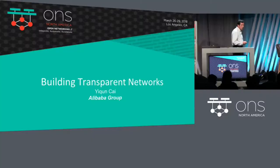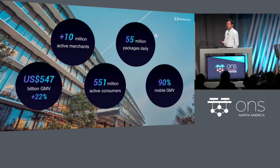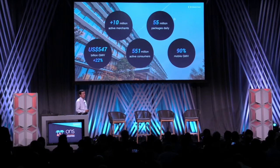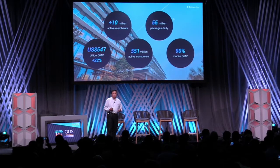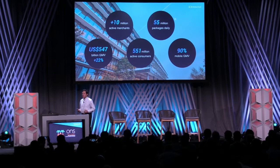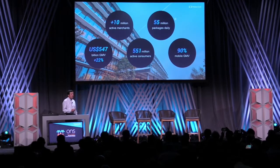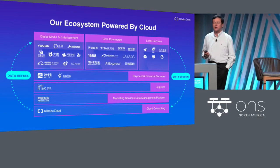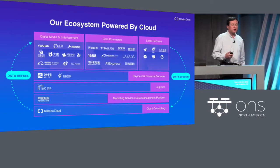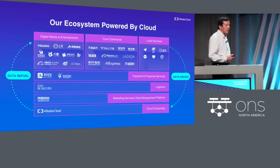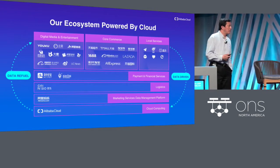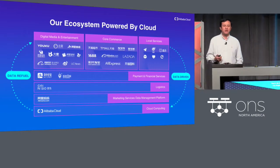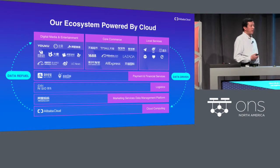Today what I'm going to talk about is what Alibaba faces — our challenges and our opportunities to build a network that can satisfy today's applications. As you all know, we at Alibaba are experiencing a great expansion in digital innovation, and to support our various businesses — here are some fancy blocks showing some of the things we do — they all demand a reliable networking infrastructure so that applications can run and support the business.